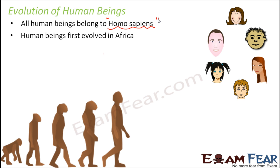Human beings first evolved in Africa. Africa was the place where human beings were seen for the first time, and from Africa they gradually spread all over the world. A lot of human evolution occurred in Africa, and almost 15 to 20 different species of early humans were found there, in the form of fossils or other evidences — quite a big number.